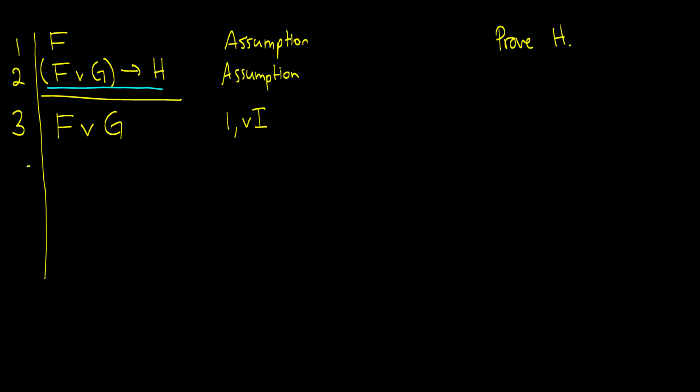And on line four, well, we know we have a rule called modus ponens that if we have F or G, then we get H. We have F or G, therefore, we get H. So this would be lines two and three modus ponens. And this is the end of the proof. So we approved H from it.